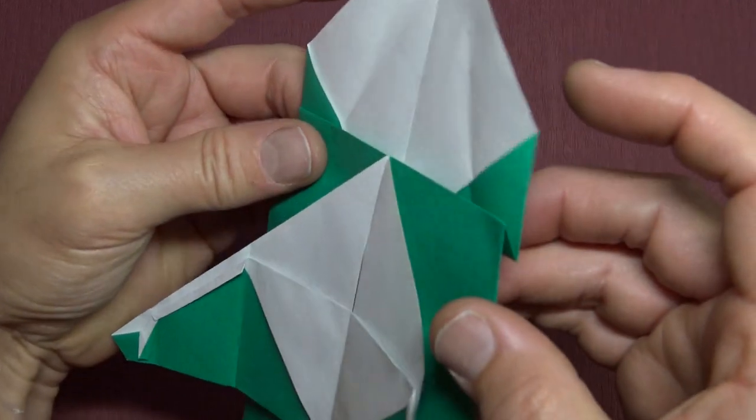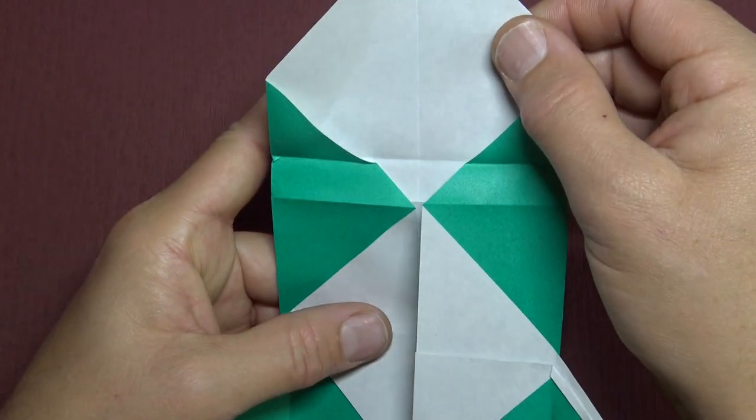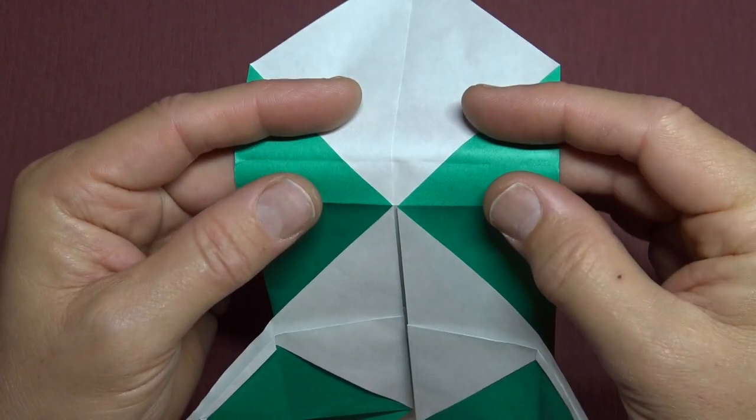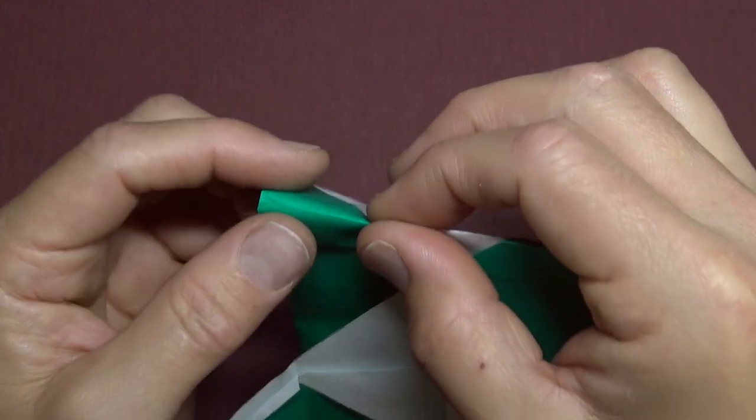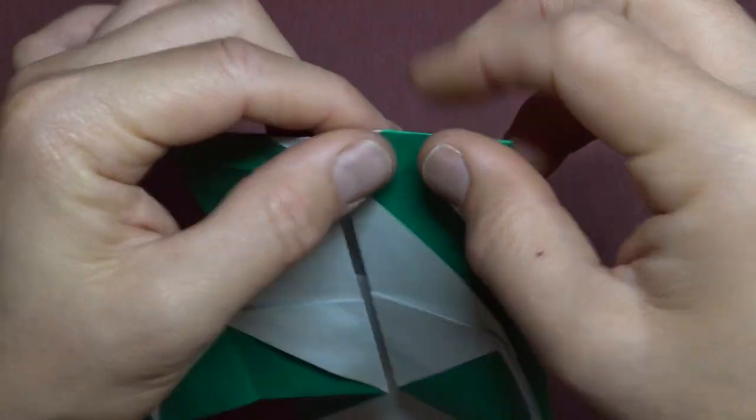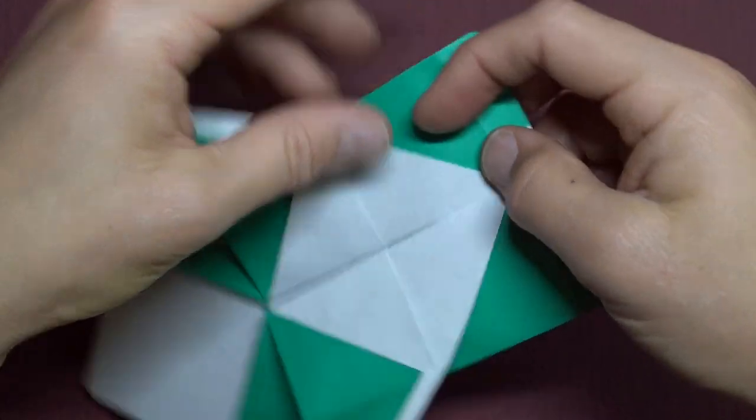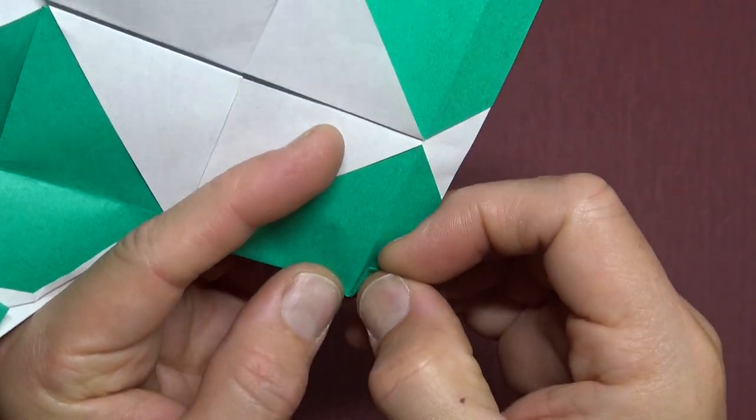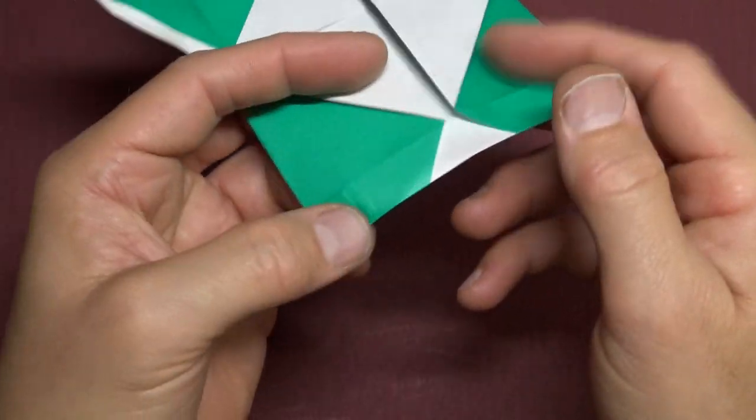So it's like that. And unfold and now fold on this crease, folding behind. Rotate. And fold this corner to the crease. And repeat.